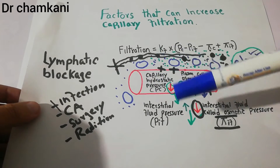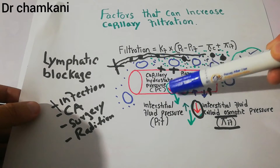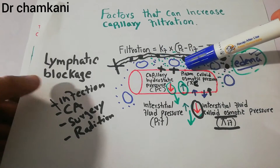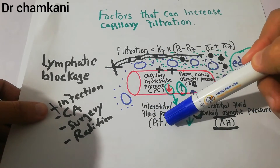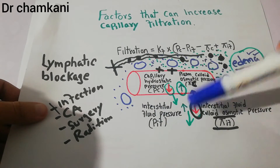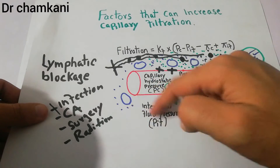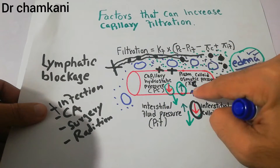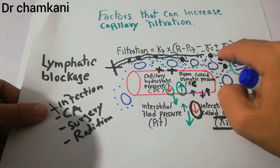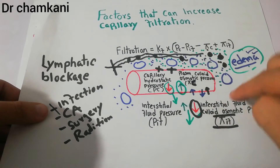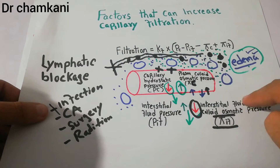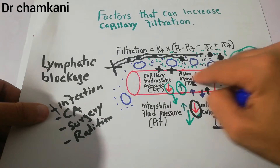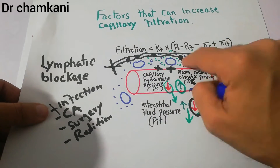The capillary hydrostatic pressure is basically trying to push the fluid outside the capillary into the interstitium. The interstitial fluid hydrostatic pressure is trying to push the fluid from the interstitium into the capillary. The plasma colloid osmotic pressure is trying to pull the fluid from the interstitium into the capillary lumen. The interstitial fluid colloid osmotic pressure is trying to pull the fluid from the capillary lumen into the interstitium.